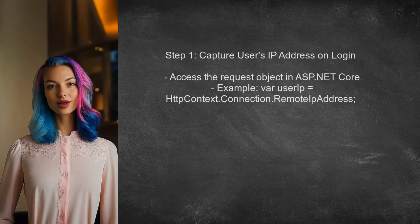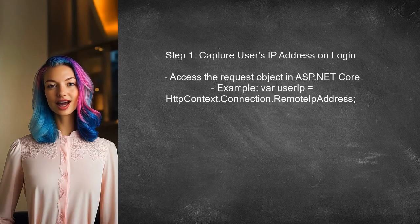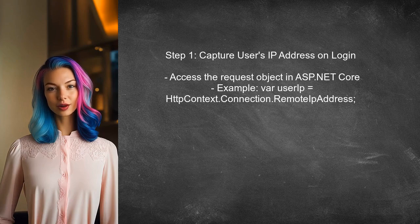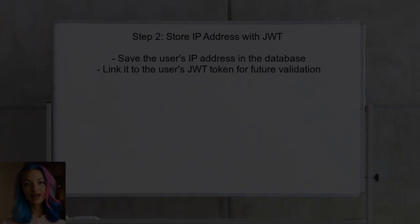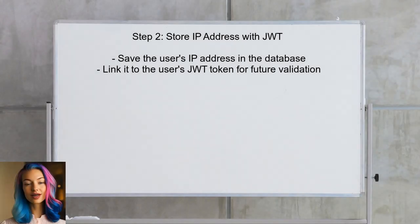To enhance security with JSON web tokens, the user should first capture the user's IP address during the initial login. This can be done by accessing the request object in the back end. Next, the user should store this IP address alongside the JWT token in the database. This way, it can be referenced later during subsequent requests.